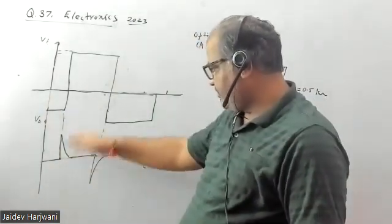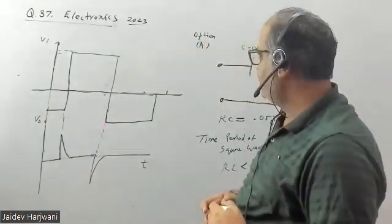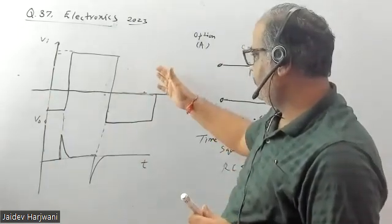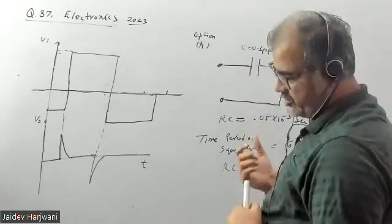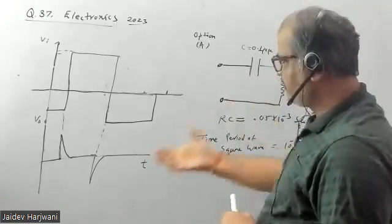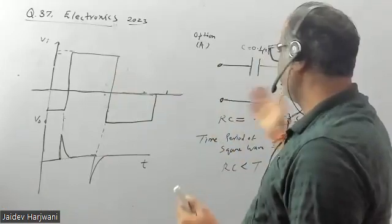The output wave is like spikes. They're asking which of the following circuits is the correct representation, or which will give you this kind of output. If you input this, the output should be like this. Which is the correct option?